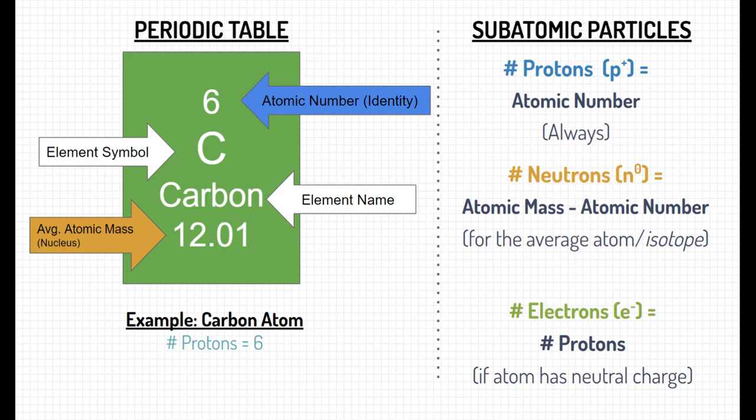First is protons. You can see the atomic number is six. Now how about neutrons? Well, all we do is take the mass and we're going to round it to 12 and minus the protons, which is six, which leaves six neutrons left over.